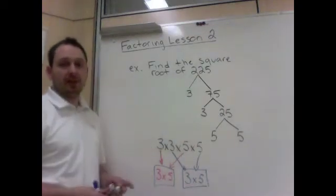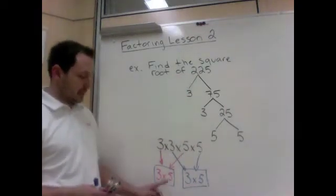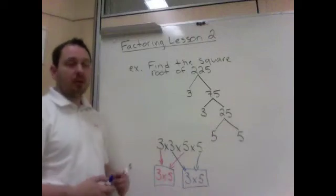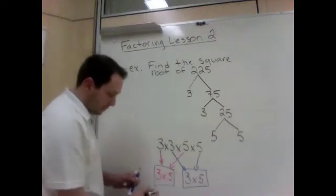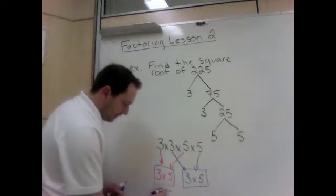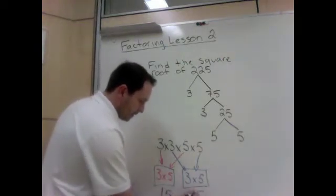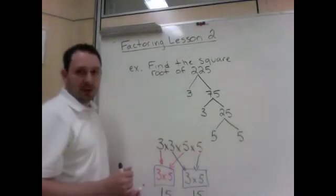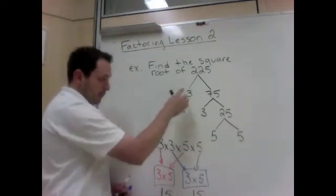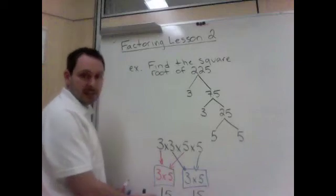If a question asked is 225 a perfect square, it is because I made two even groups. And now to finish up, what is the square root? The square root is simply one of these groups. 3 times 5 is 15. And 15, so 15 times 15 is 225. So the square root of 225 is 15.